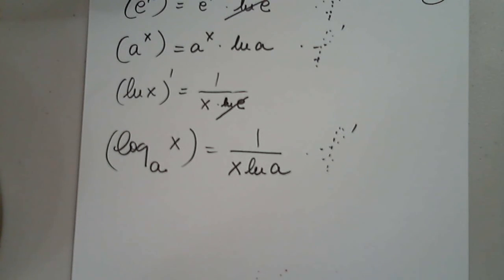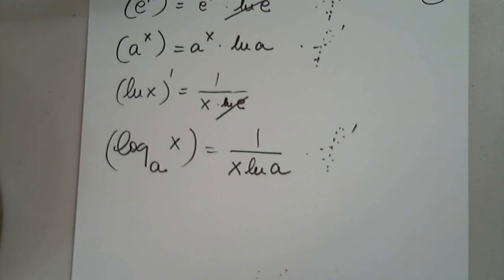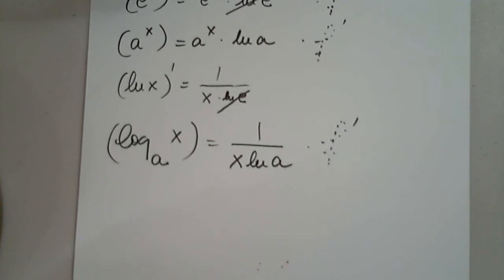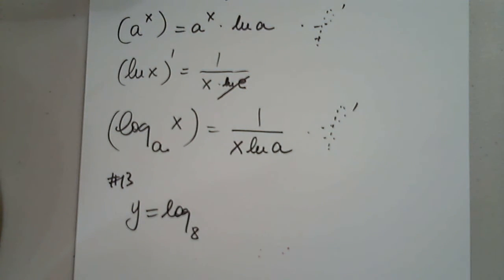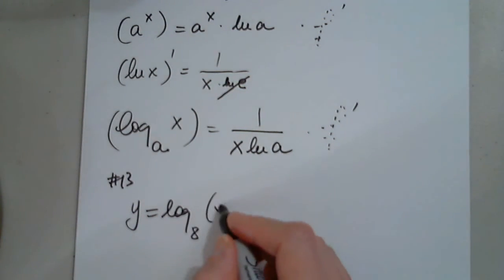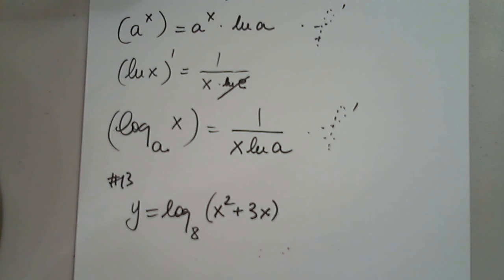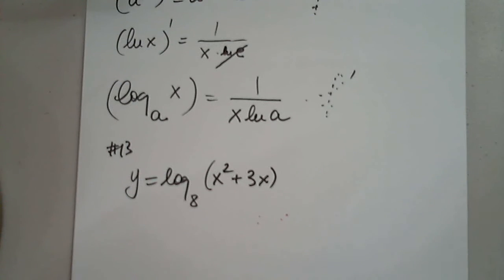This is almost the last formula before we look at hyperbolic functions — no more functions to differentiate after that. So we can choose any other base; for example, base 8. Let's say y equals log base 8 of x squared plus 3x.